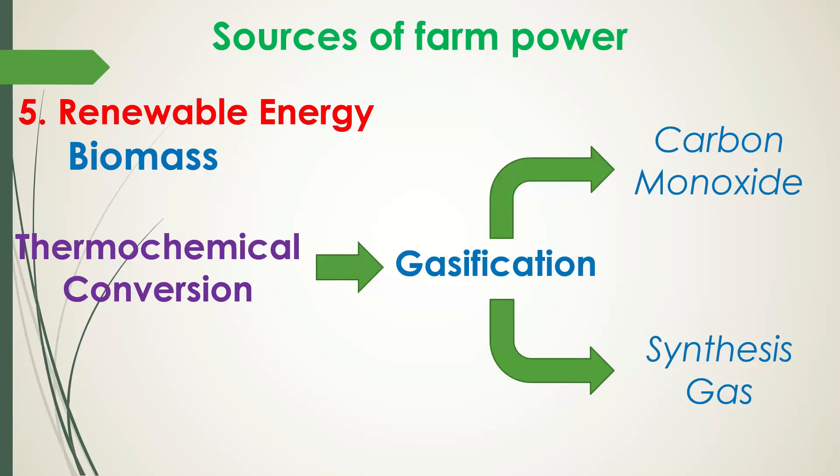Gasification produces a carbon monoxide and hydrogen-rich gas called synthesis gas or syngas. Syngas can be used as a fuel for diesel engines, for heating, and for generating electricity in gas turbines. It can also be treated to separate the hydrogen from the gas, and the hydrogen can be burned or used in fuel cells. The syngas can be further processed to produce liquid fuels using the Fischer-Tropsch process.